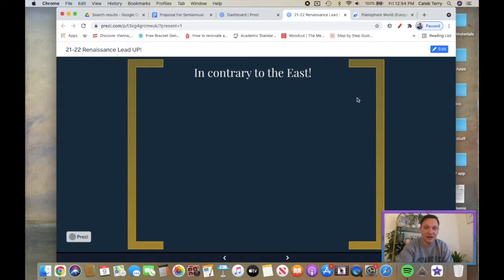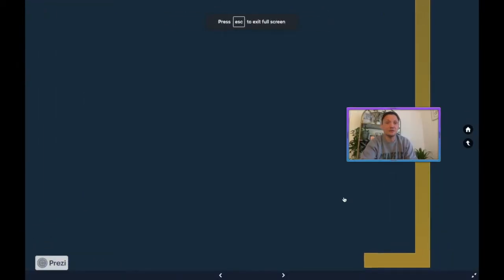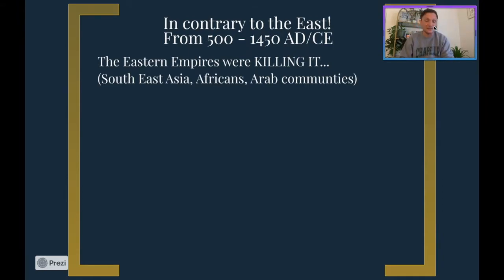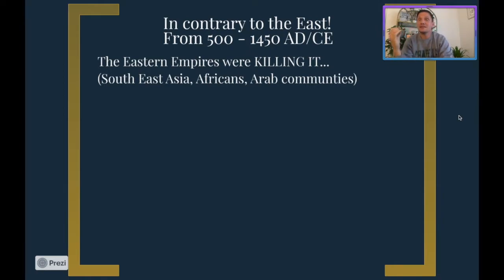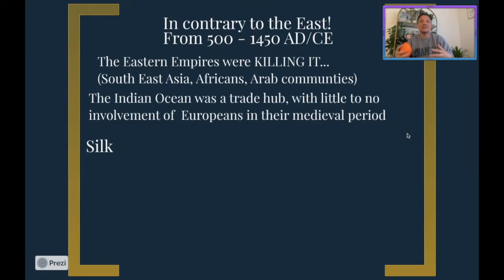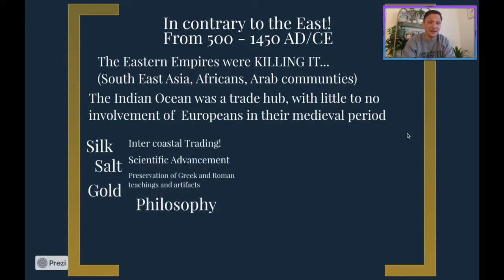Those different Eastern areas are murdering it — doing a fantastic thing — because from about 500 to 1450 AD/CE, the same time period as the European Middle Ages, the Eastern Empires are going through a Golden Age. They are going through a very positive economic time period, particularly Southeast Asia, the African communities along the Swahili Coast, and the Arab communities. The Indian Ocean trade hub had little to no European involvement in their medieval period unless you're referring to the Byzantines.